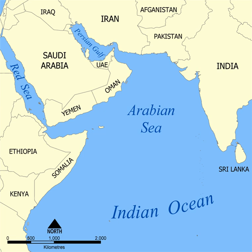=== Arctic Ocean === Clockwise from 180 degrees: Chukchi Sea, East Siberian Sea, Laptev Sea, Kara Sea, Barents Sea — connected to Kara Sea by Kara Strait — Pechora Sea, White Sea, Queen Victoria Sea, Wandel Sea, Greenland Sea, Lincoln Sea.